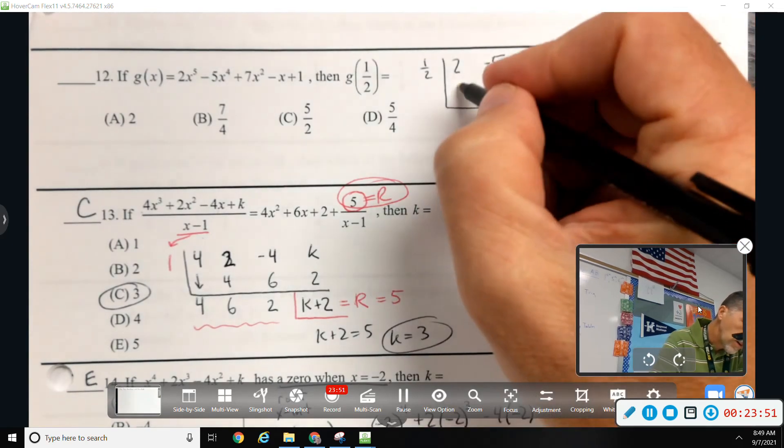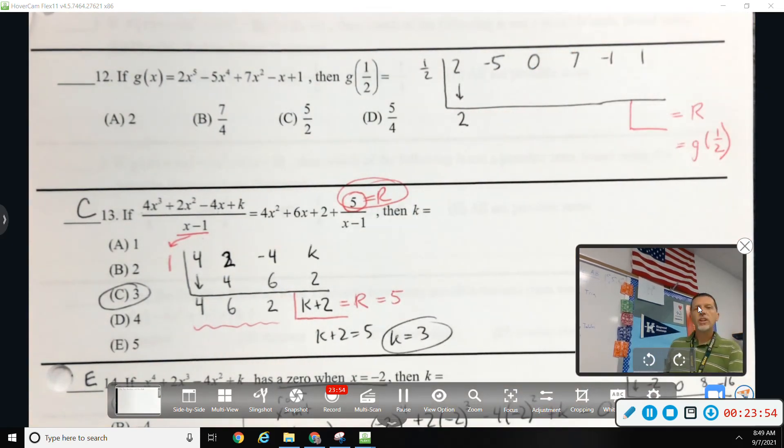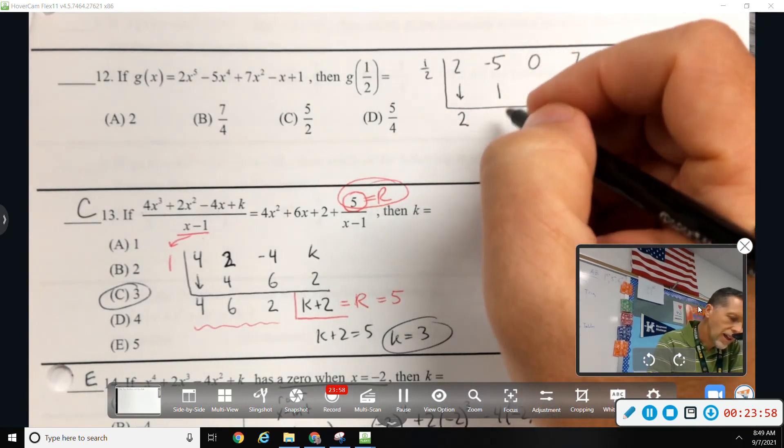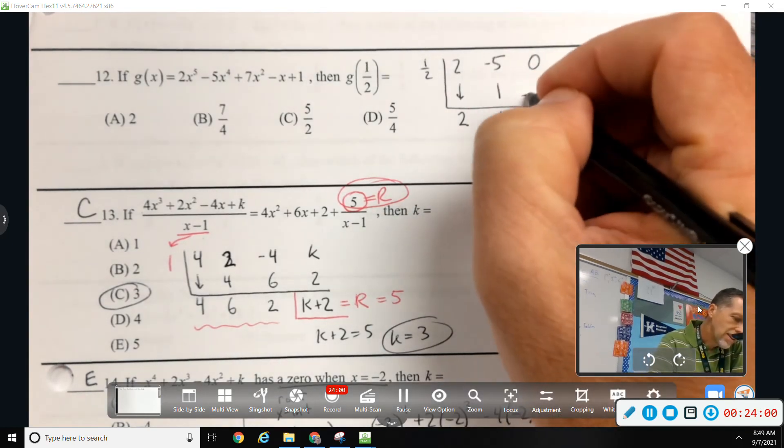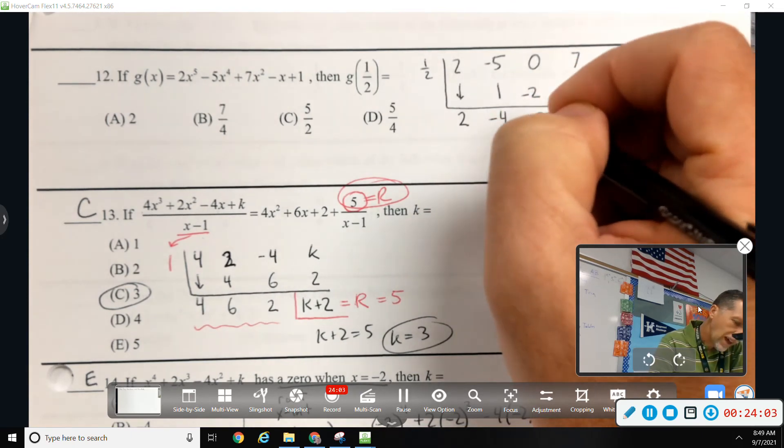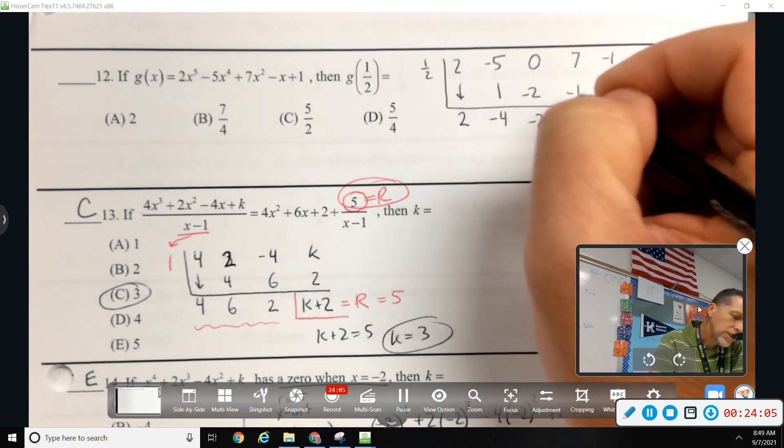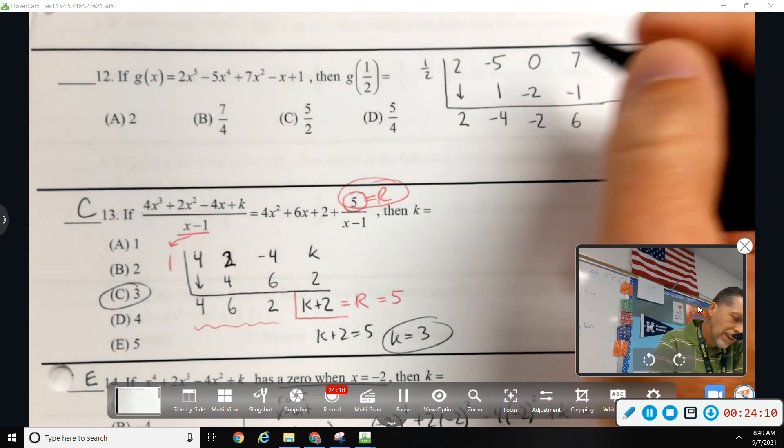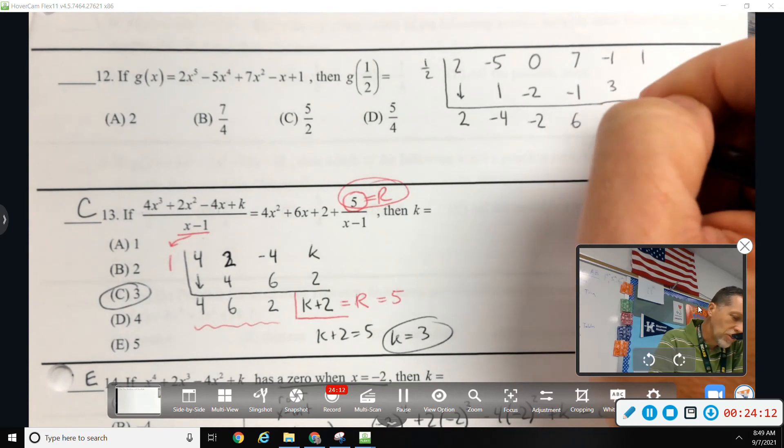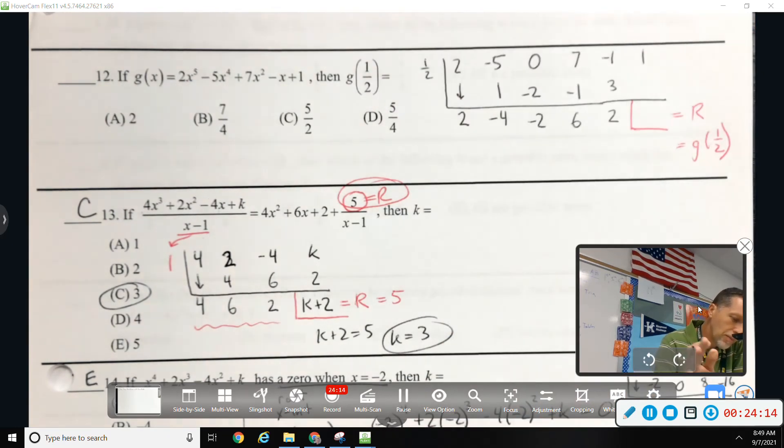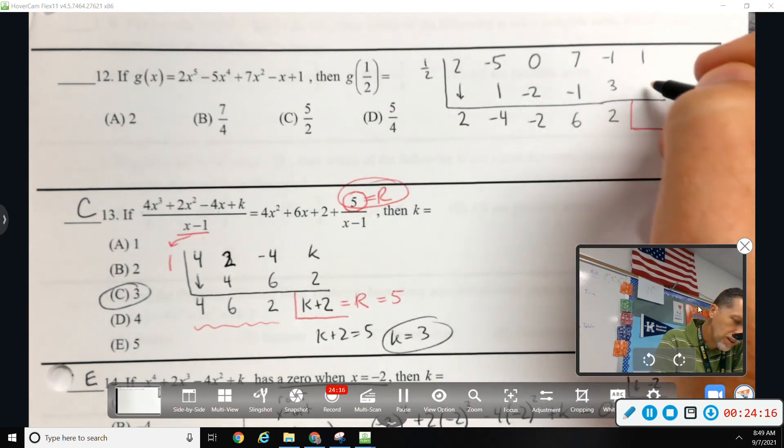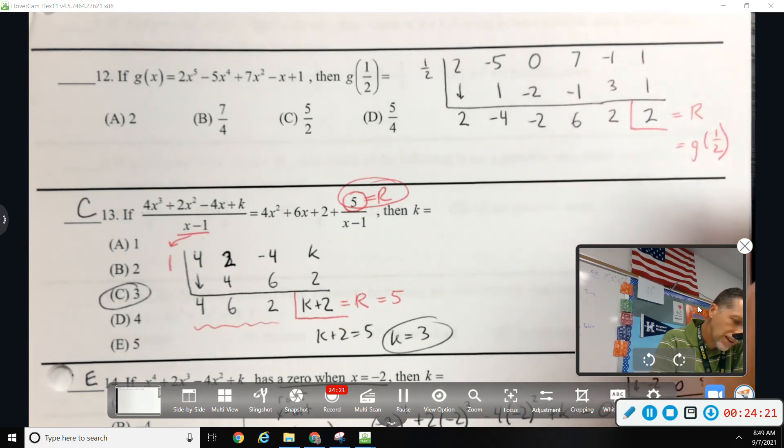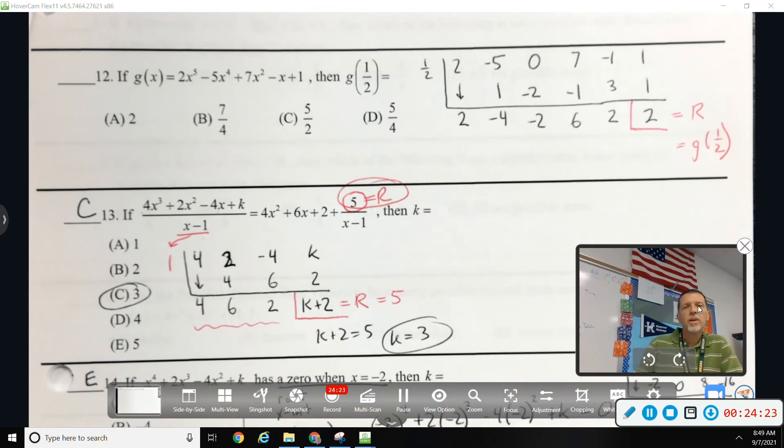And then whatever I get for the remainder, that should be my answer. I forget the fancy name of that. He called it something in the con video, the polynomial remainder root theorem or something like that. So, copy down the two. Let's get this another chance to practice synthetic division. Multiply, add, multiply, add, multiply, add. This is the problem with these is just don't mess up somewhere because then it messes up the rest of the problem. Did I do that right? Multiply, add.